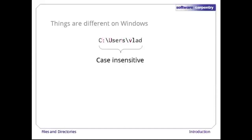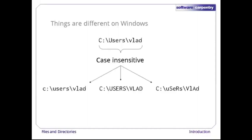Finally, Windows file names and directory names are case-insensitive. Upper and lower case characters mean the same thing. This means that the path C:\users\vlad could be spelled in 1024 different ways. Some people argue that this is more natural, but it does cause some headaches for programmers and can be difficult for people whose first language doesn't use a cased alphabet to understand.